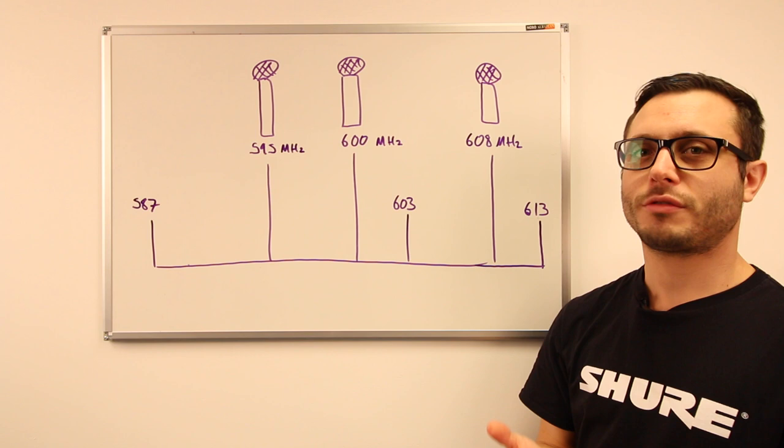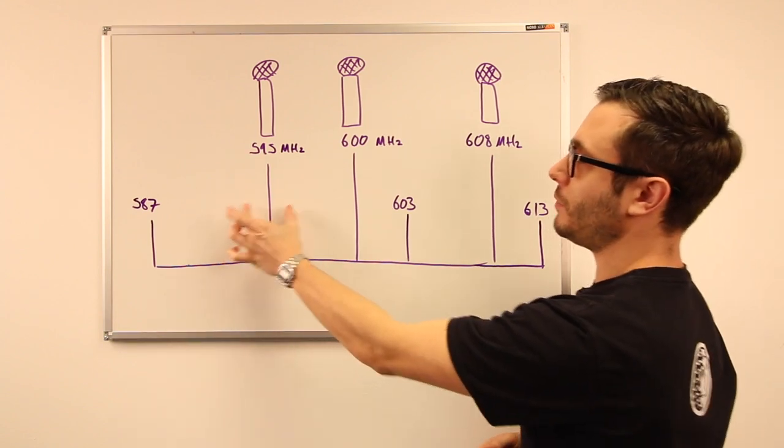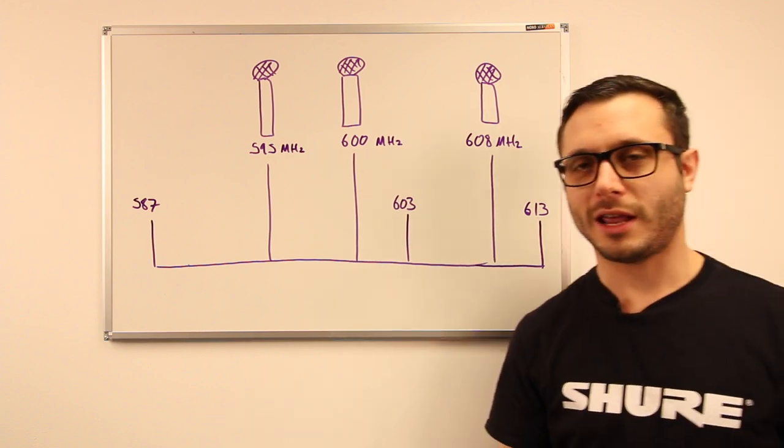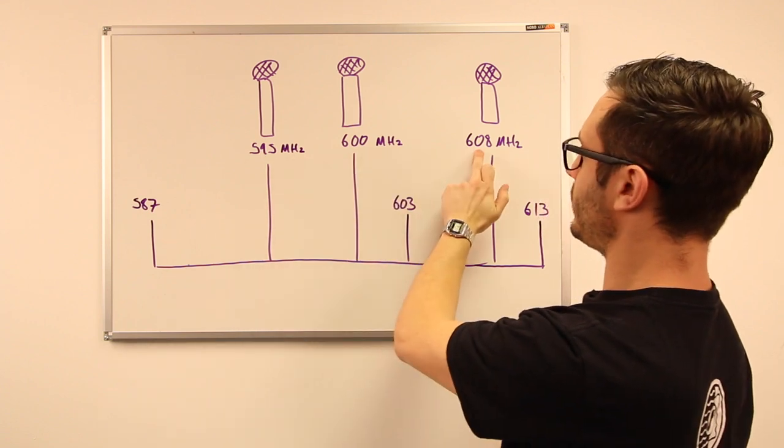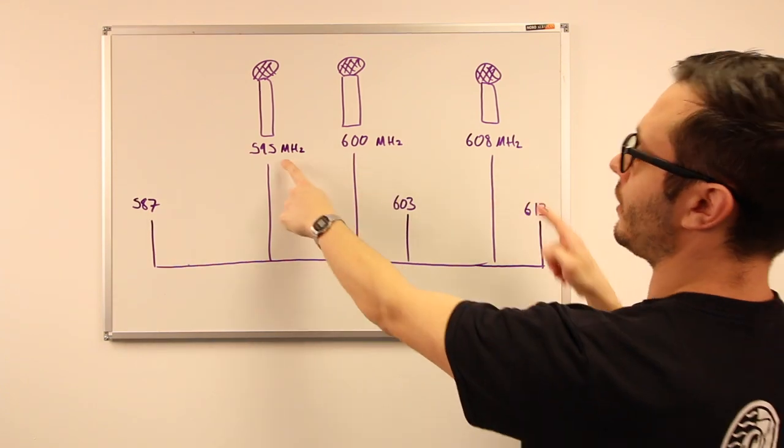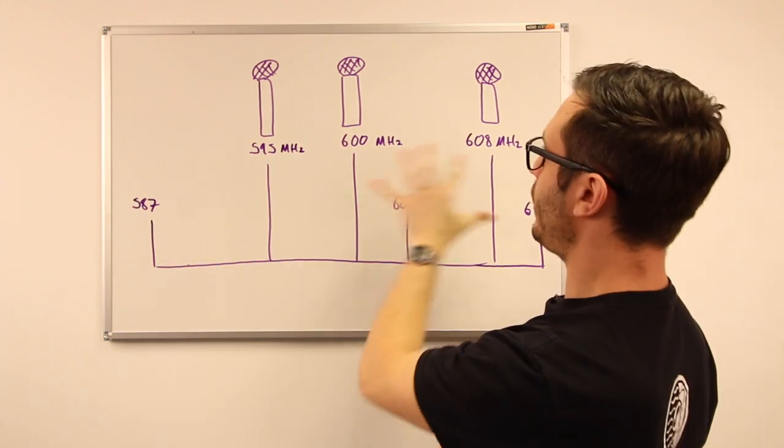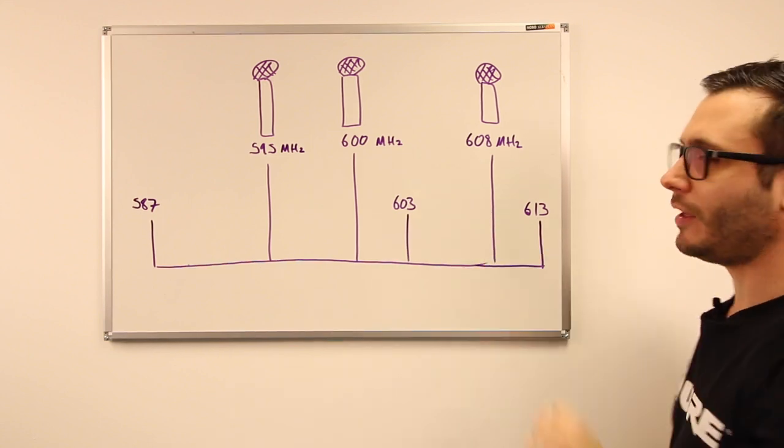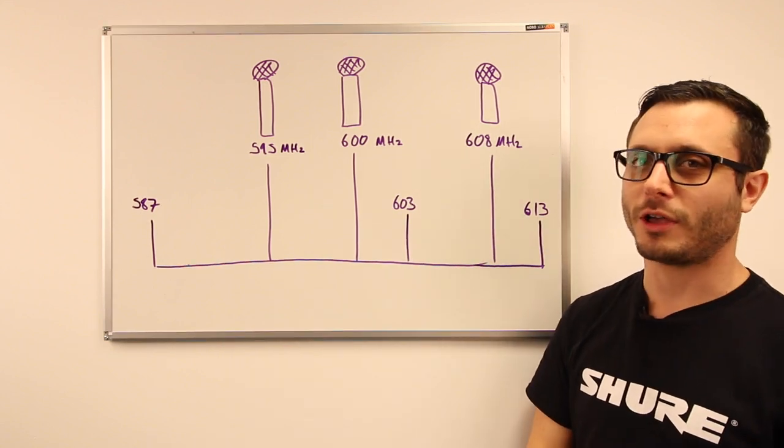We're now going to look at three transmitter third order, so it's going to be the combination of frequency one with frequency two and frequency three. Now I've done some really advanced mathematics for you—I added up these two and took away this one, added up these two and took away that one, and then lastly added up these two and took away this one. Those three microphones end up giving us three further third order intermodulations, so other frequencies we now can't use.